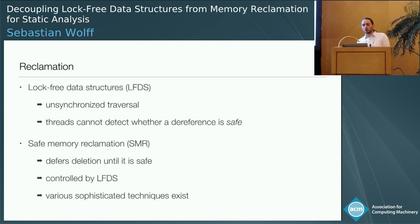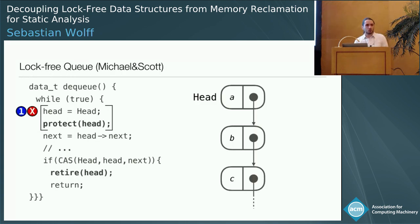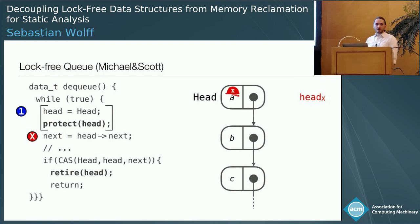To overcome this problem, there is a technique called safe memory reclamation (SMR). At a high level, it provides a mechanism for the programmer to defer deletions until they are safe. Intuitively, the lock-free data structure provides feedback to the SMR algorithm, and the SMR algorithm eventually decides when a free or deletion can be done. To show how this looks in the Michael-Scott queue: thread X reads out the shared pointer head and now protects this node, telling the SMR algorithm that thread X is going to access it and that any deletion should be deferred. I assume those two commands execute atomically.